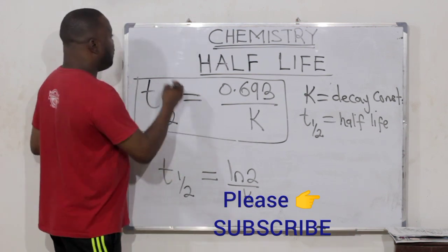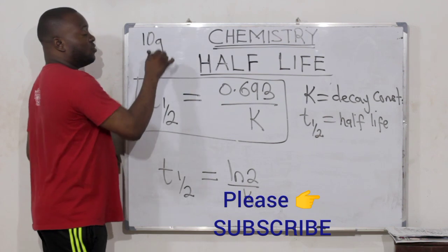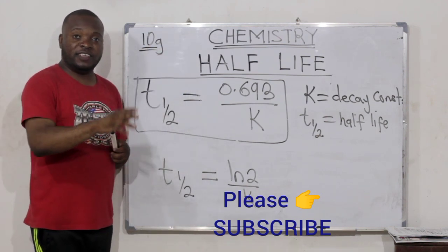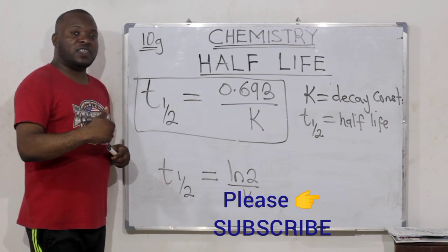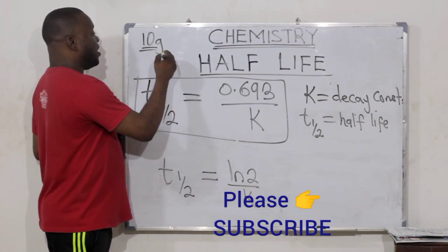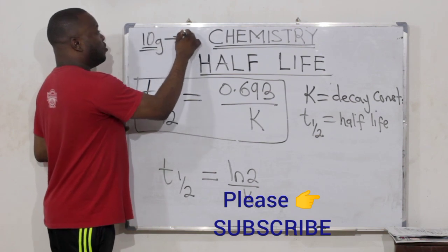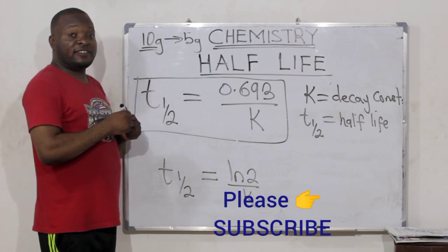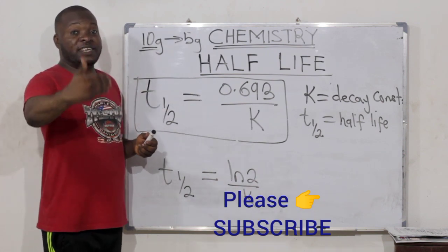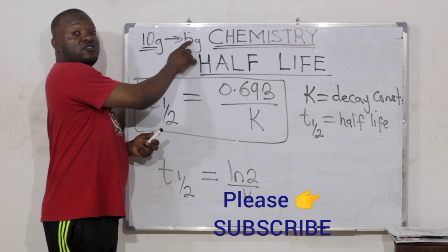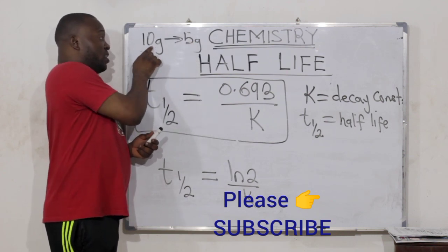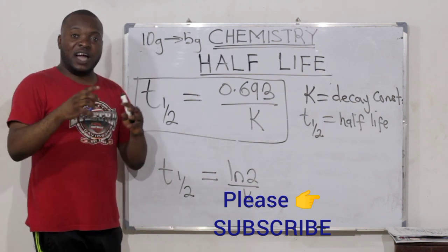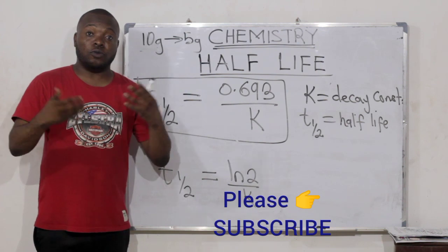For instance, if I have 10 grams of uranium and I keep it on a desk now, and after 600 years I discover that the 10 grams has reduced to 5 grams — remember that 5 is half of 10 — then if it takes the uranium 600 years to reduce from 10 grams to 5 grams, then 600 years becomes the half-life of that uranium.